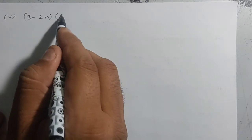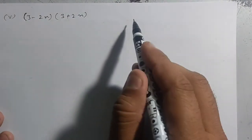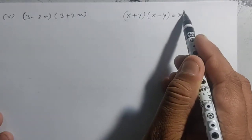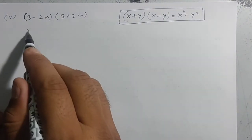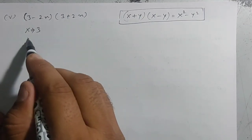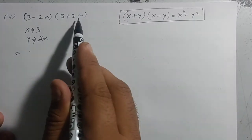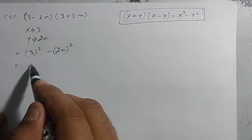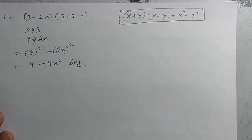Fifth part: (3 − 2x)(3 + 2x). Same identity जो fourth में लगी थी — (x + y)(x − y) = x² − y². यहाँ x की जगह 3 और y की जगह 2x है। तो: 3² − (2x)² = 9 − 4x². यह आपका answer आ जाता है।